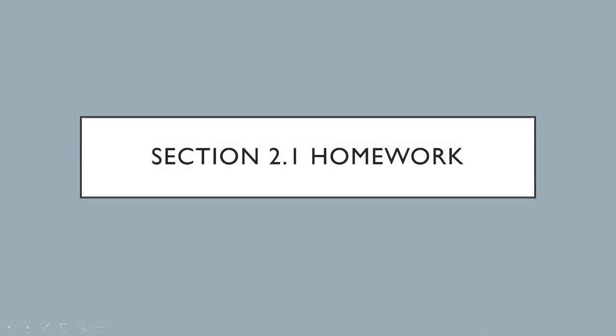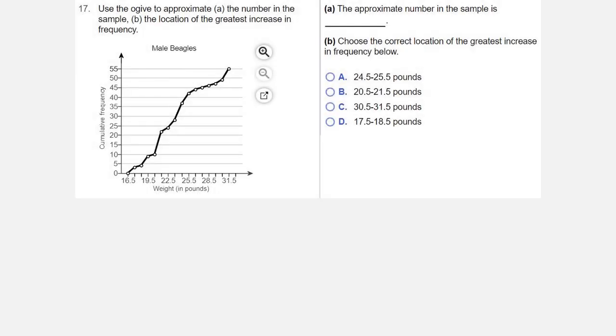We're looking at homework from section 2.1. This is question number 17. Use the ogive to approximate A, the number in the sample, and B, the location of the greatest increase in frequency.